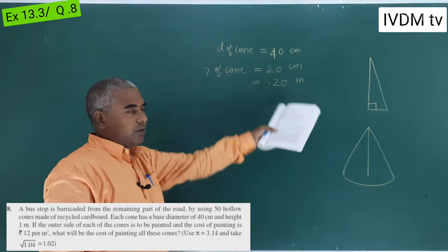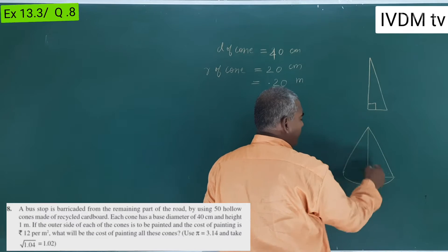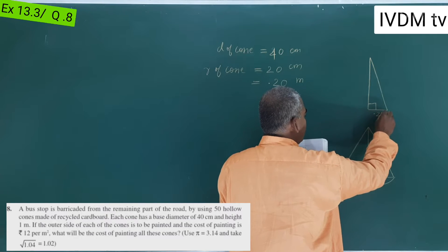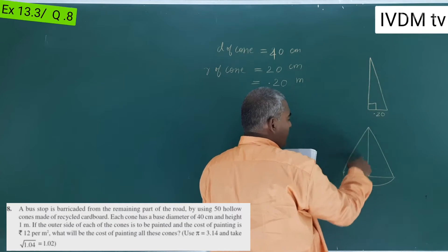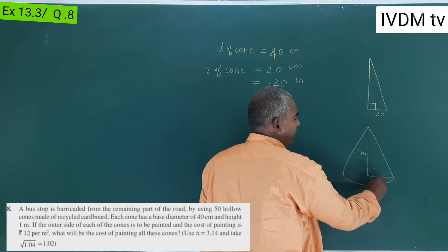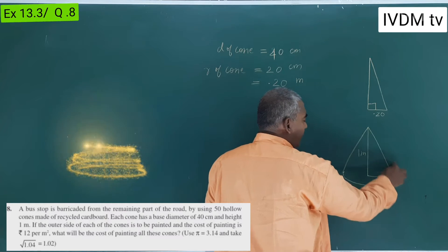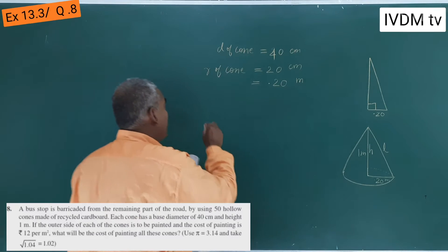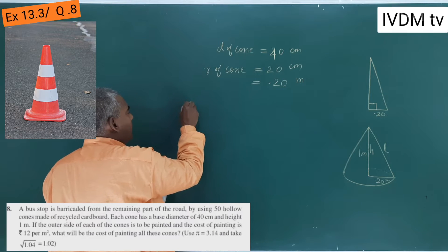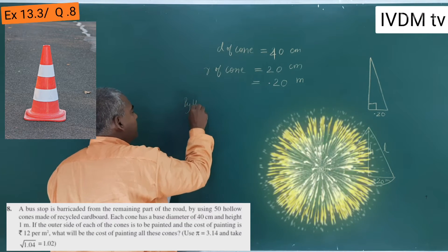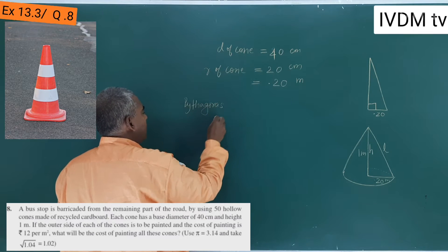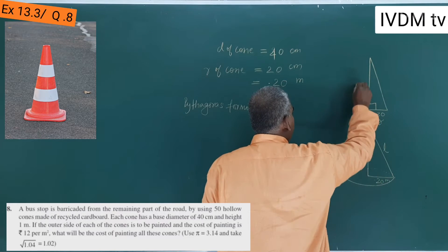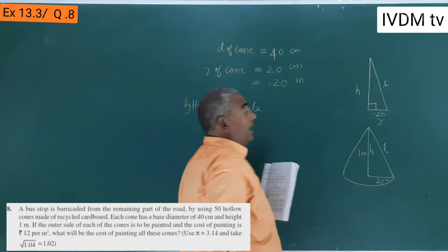A cone is essentially a right angle triangle. Here, r = 0.20 m, height h = 1 m, and the slant height is l — which is the hypotenuse. We need to find l using the Pythagoras formula.